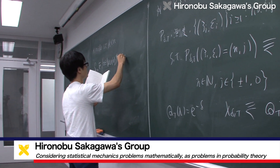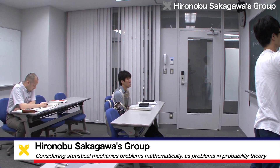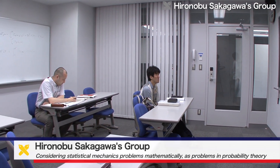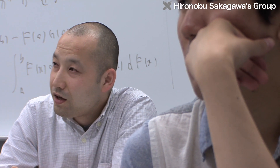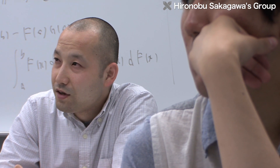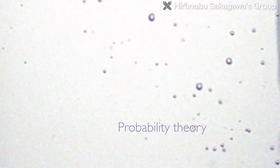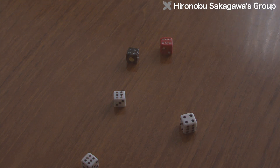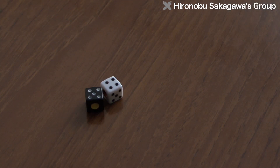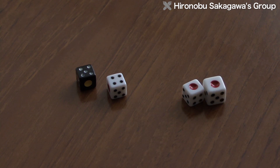The Sakagawa Group in Keio University's Department of Mathematics studies problems in probability theory motivated by topics in statistical mechanics. A major goal is to discover regularities in phenomena that involve randomness, such as repeatedly tossing a coin or rolling a die, with the aim of providing mathematical explanations.